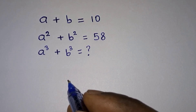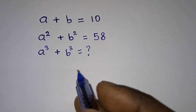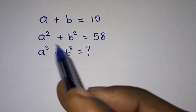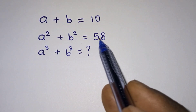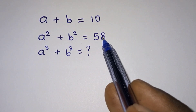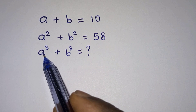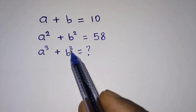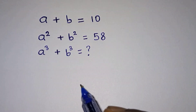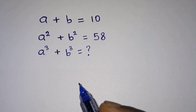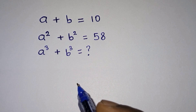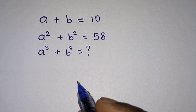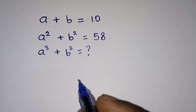Hello everyone. In this video we are given this interesting problem: a plus b is equal to 10, a squared plus b squared is equal to 58, and we have to find the value of a to the third power plus b to the third power. Before we start, if you are new here please subscribe to my channel and don't forget to like this video. Now let's get started.